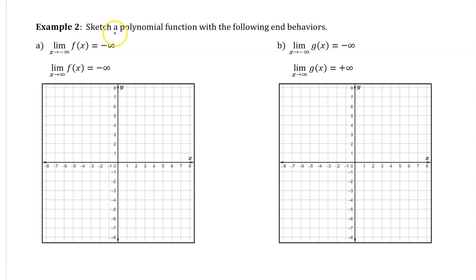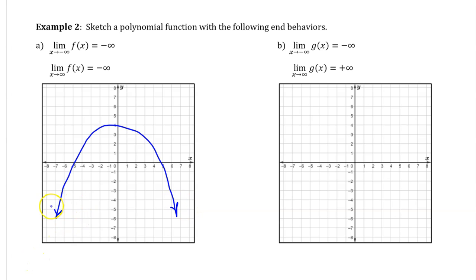For example 2, we will sketch a polynomial function with the given end behavior. For part a, the limit as x approaches negative infinity of f of x equals negative infinity, so we draw the function falling as we go towards the left. The limit of f of x as x approaches infinity is also negative infinity, so it falls on the right too. Here's a simple polynomial that satisfies those conditions, but I also could have drawn something fancier.